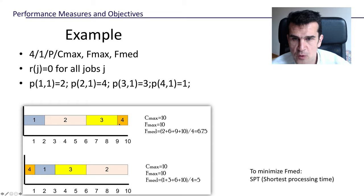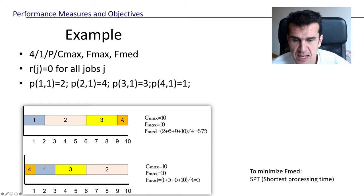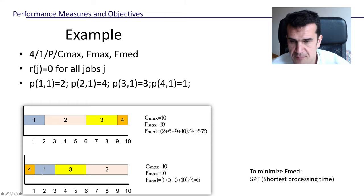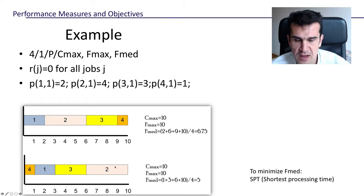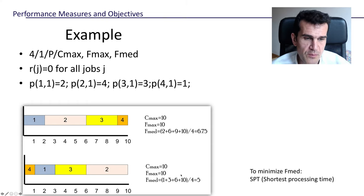However, F_mean will be different depending on the ordering. For the order 1, 2, 3, 4: job one finishes at time 2, job two at time 6, job three at time 9, and job four at time 10, giving an F_mean of 6.75. But if we sort them in the order 4, 1, 3, 2, we get an F_mean of 5. So if we want to minimize average flow time, this second ordering is better.